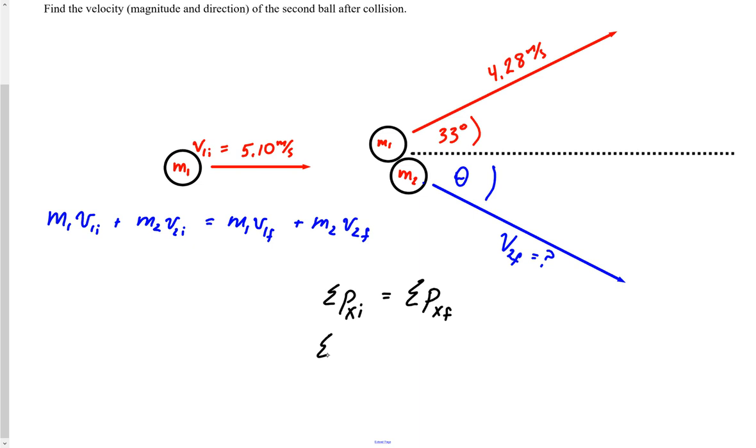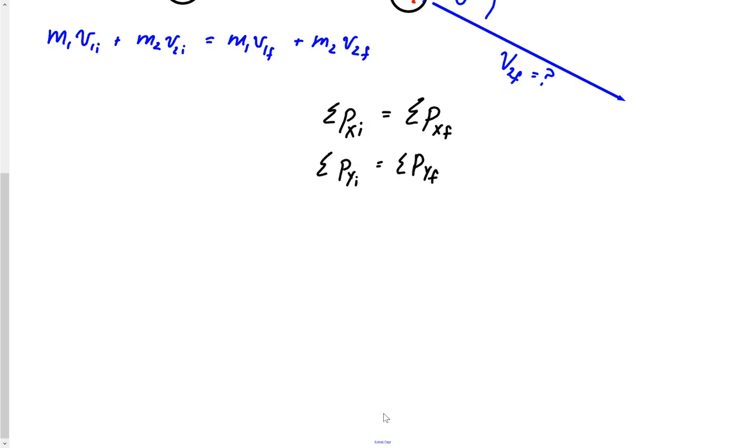And likewise, the sum of all our momentums in the y direction initial also have to be equal to the sum of all our momentums in the y direction final. Well, here's what's cool. Basically, the physics in this problem is over. We've addressed it, but you probably need to actually know how to get the numbers in here.